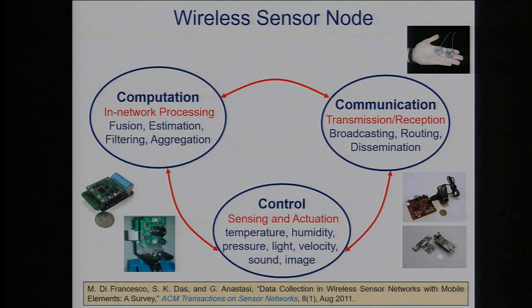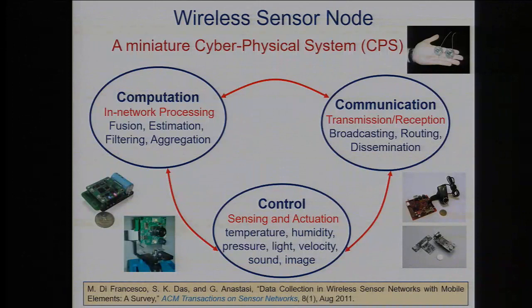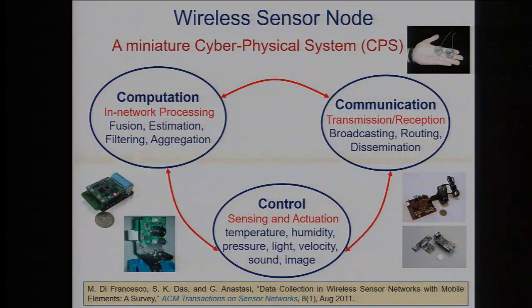A sensor has a combination of sensing, communication, computation, and control — which is actuation. That actually tells me that a sensor is by definition a miniature cyber physical system. A cyber physical system is an integration of sensing, communication, computing, and control — that's why you cannot imagine designing a CPS without having a sensor as the building block. IoT also cannot be conceptualized without a sensing and actuation component.